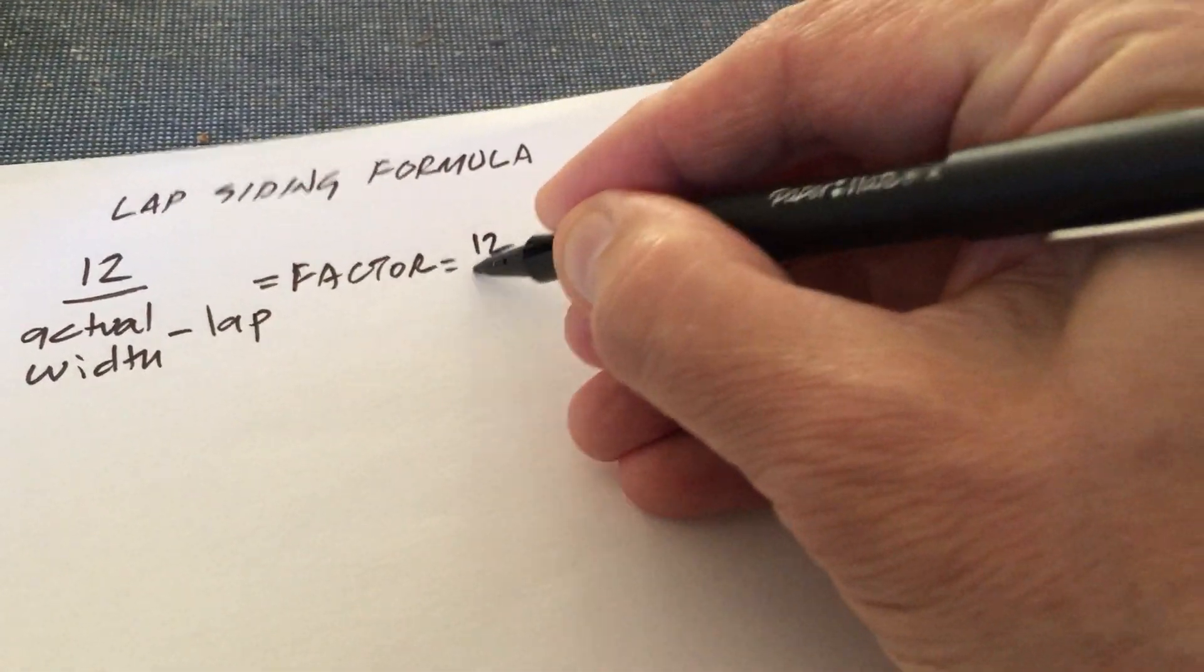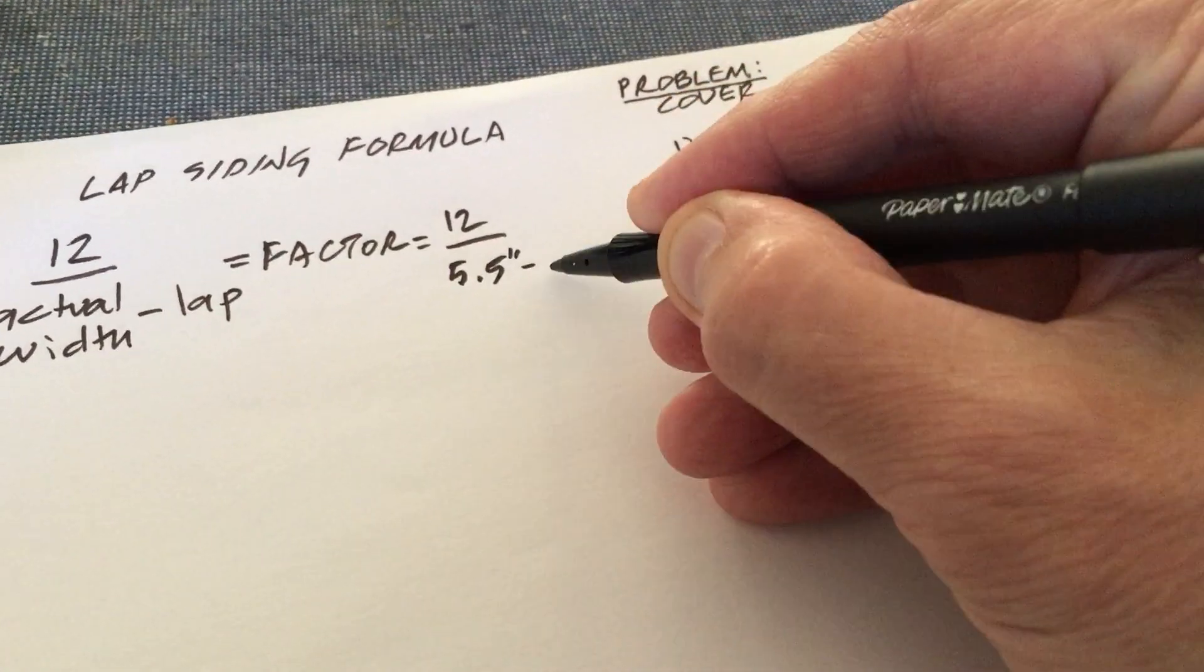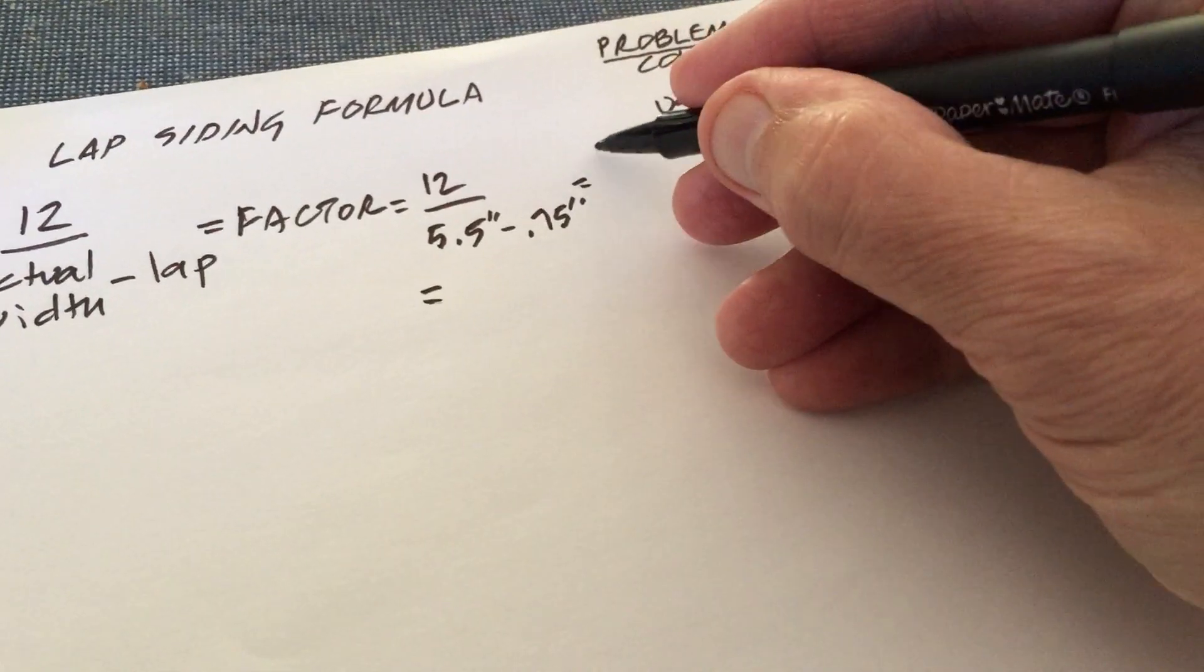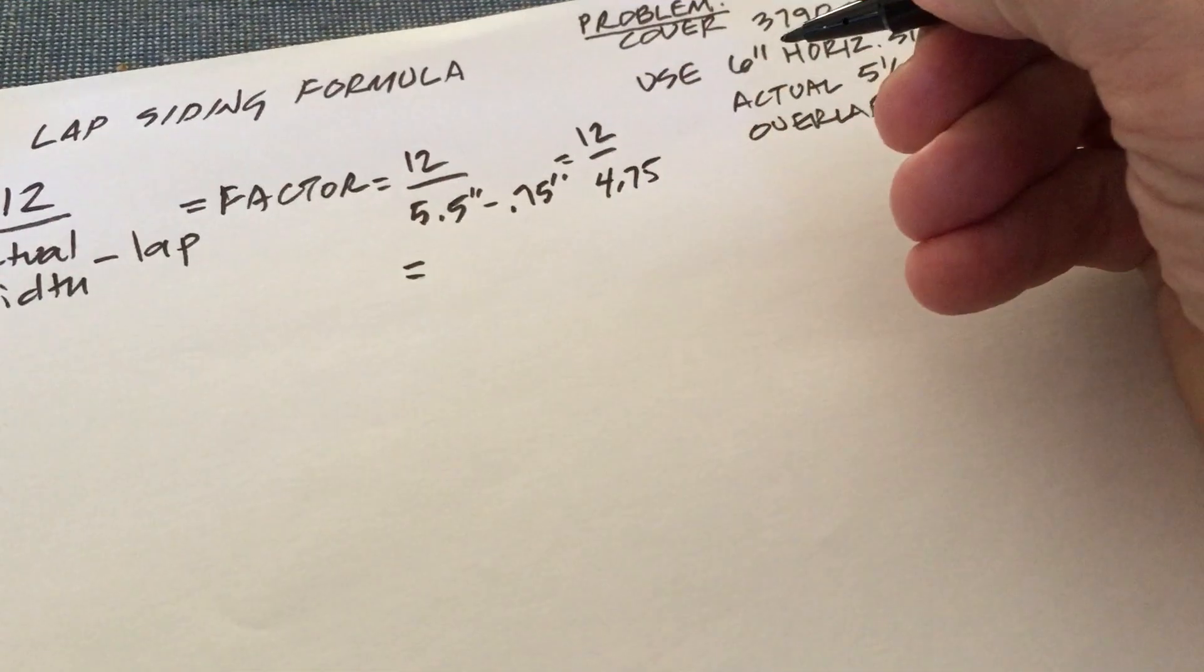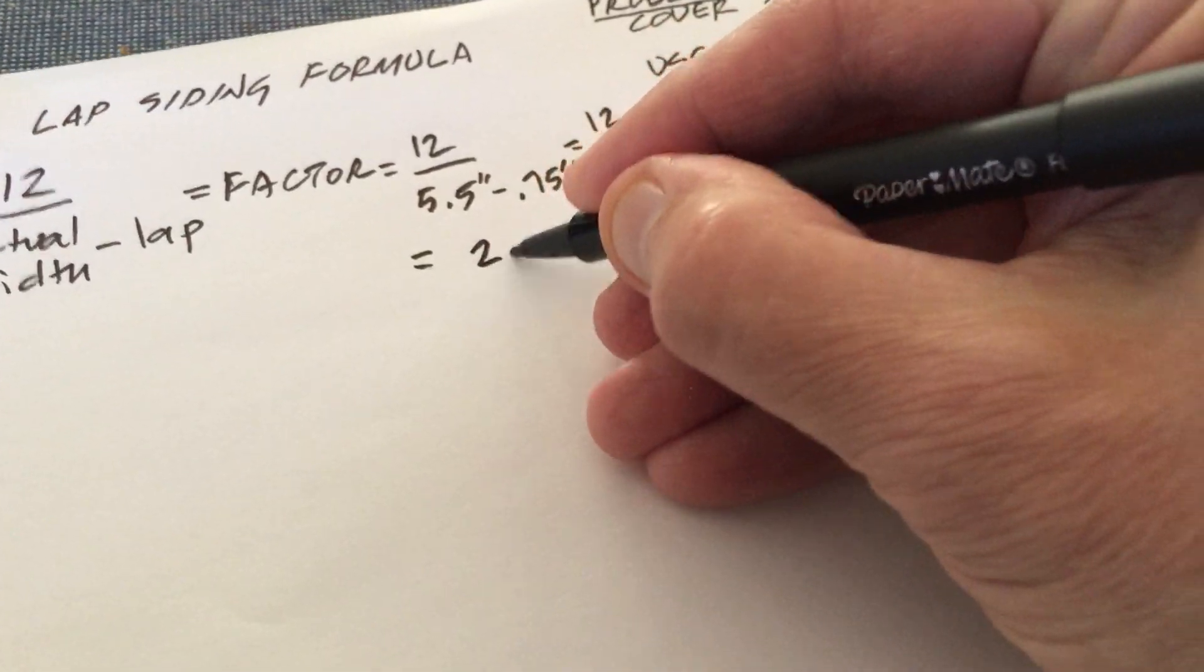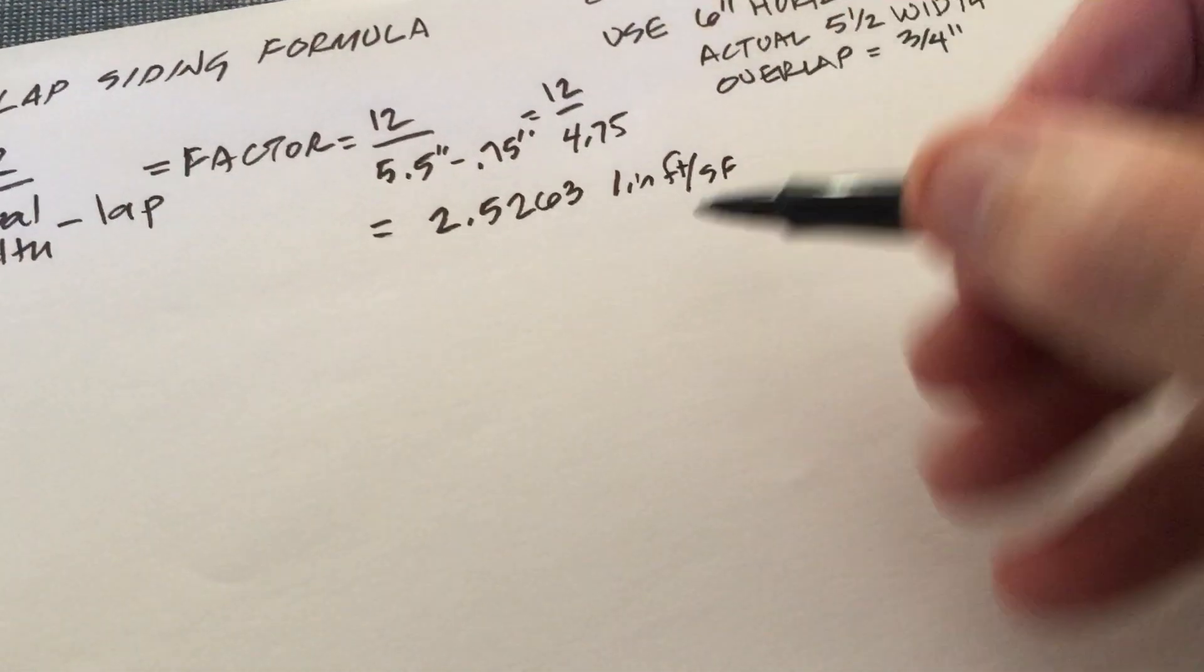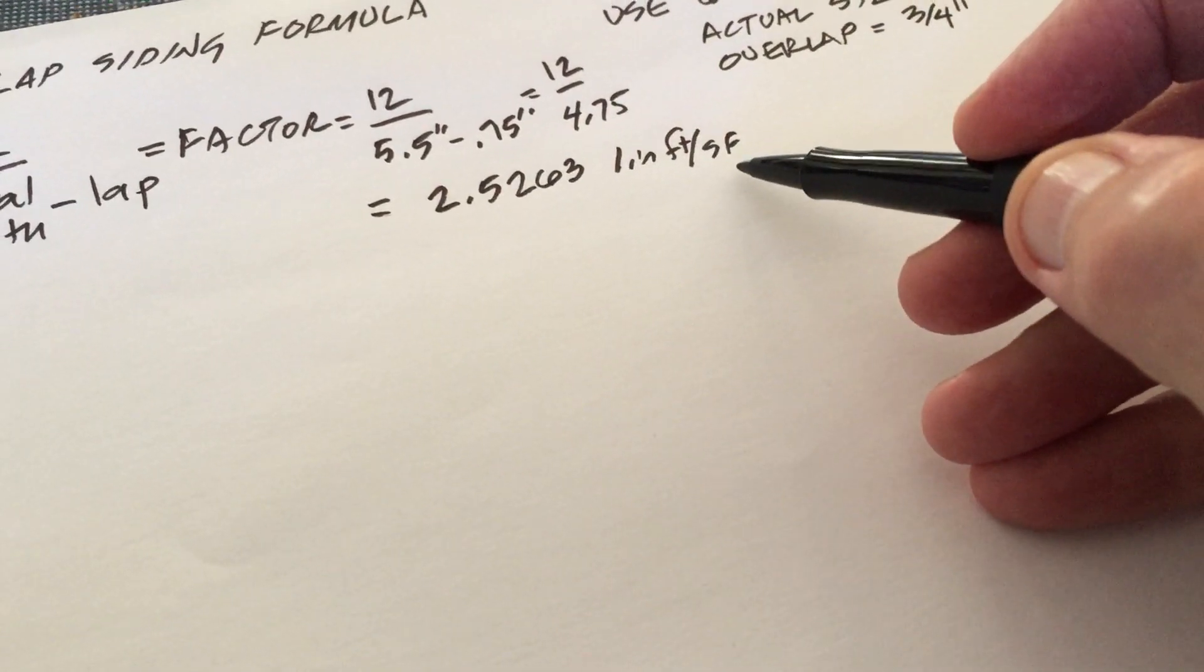So we're going to put 12 in here over 5 and a half inches minus three quarters of an inch which is 0.75 inches and that is equal to 12 over 4.75 and that's equal to 2.5263 linear feet per square foot. So 2.5263 linear feet cover one square foot.